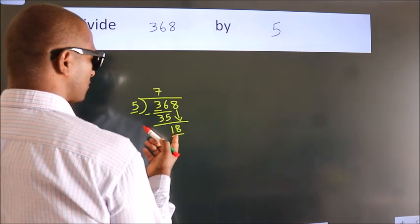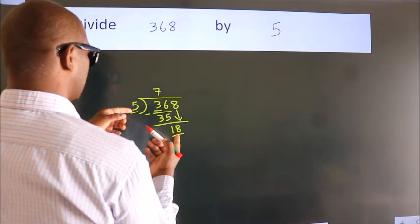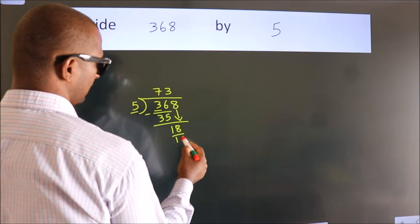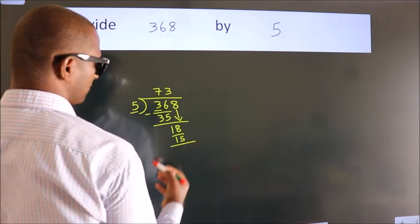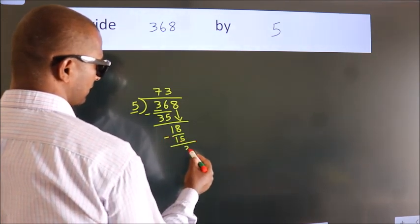A number close to 18 in the 5 table is 5 times 3, which is 15. Now, we subtract. We get 3.